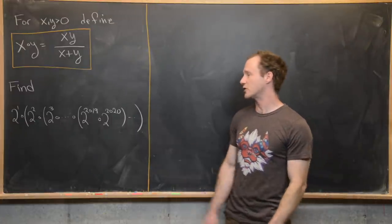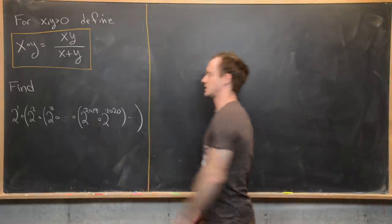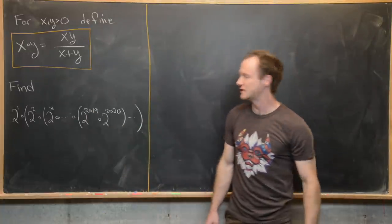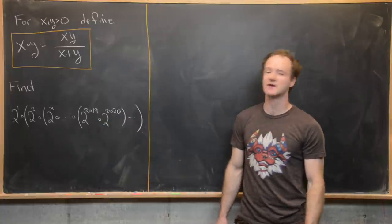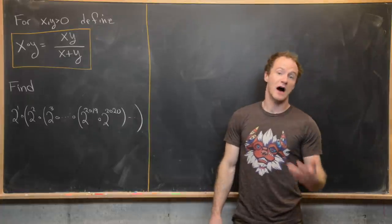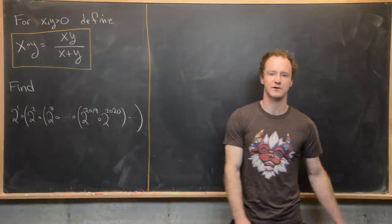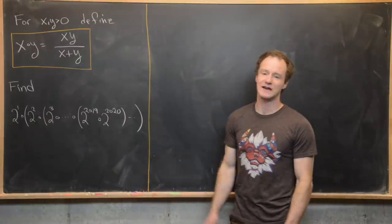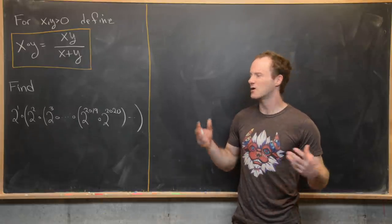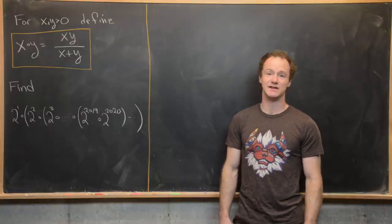Our goal is to evaluate this expression. The innermost operation will be 2 to the 2019 circle 2 to the 2020, and then we do the operation with 2 to the 2018, all the way down until we get 2 to the first power. I'll give you two solutions for this, and the hint that jumps out to me immediately is to use induction.